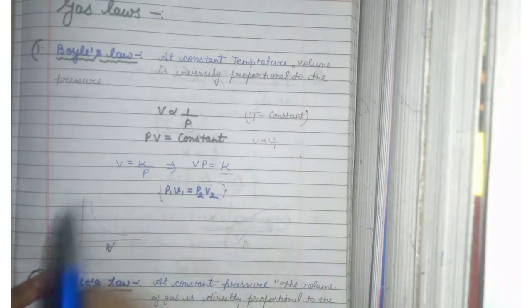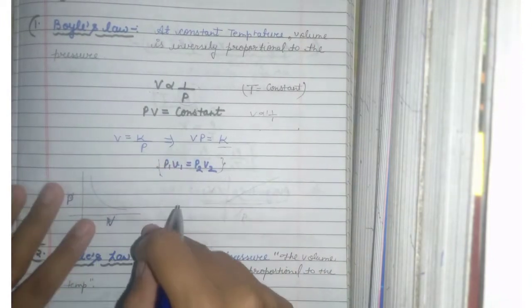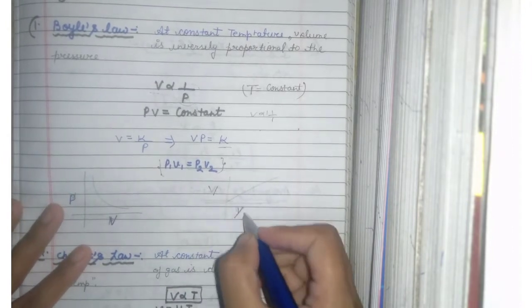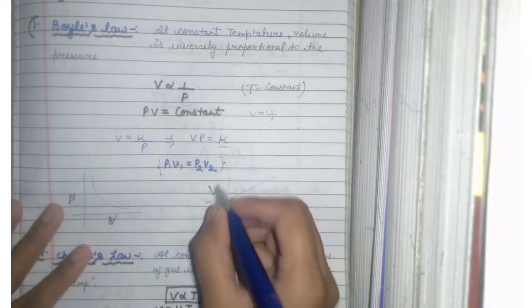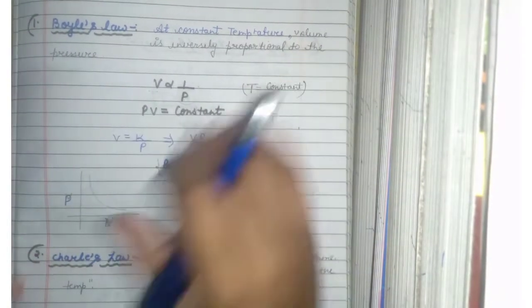You can write this as well. If you have 2 volume and 2 pressure, P1V1 is equal to P2V2. If we talk about graph, if you look at P and V, then there is a curve. And if we look at V over 1 by P, this is a straight line. This is your Boyle's Law.